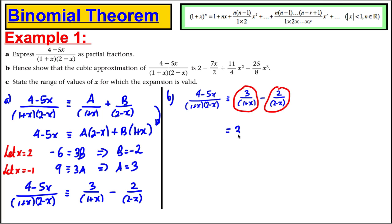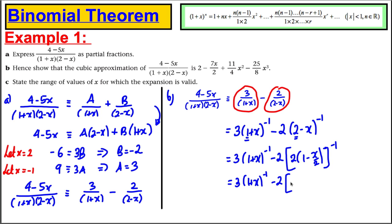Before we do that, let's write these in proper binomial form. 3 times 1 plus x to the minus 1, subtract 2 times 2 subtract x to the minus 1. We're nearly there. We're not quite there because both these numbers must be 1, and this one's currently a 2 for the binomial theorem to work. So, keep the first one. That's 3 times 1 plus x to the negative 1, subtract 2. Let's factorise out the 2 here. This would be 2 to the minus 1 times 1 minus x over 2 to the minus 1. And then we could just times that out nice and neatly. Negative 2 times a half would just be negative 1. So, it would be negative 1 minus x over 2 to the minus 1.